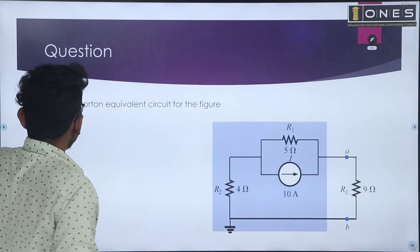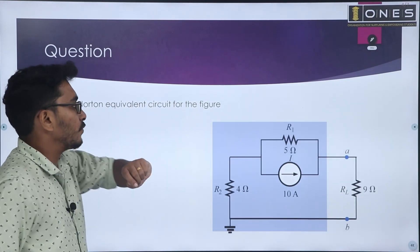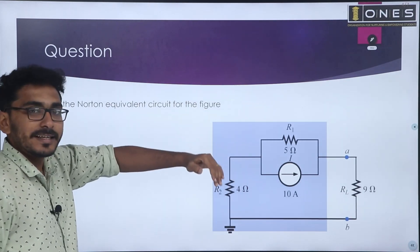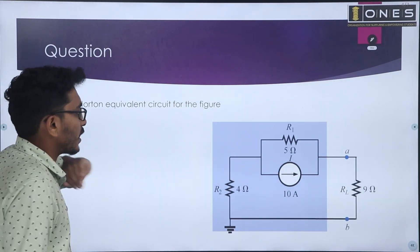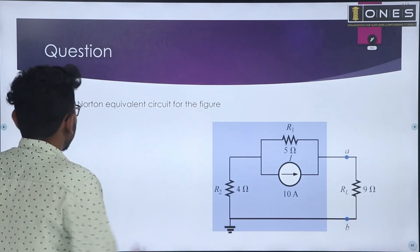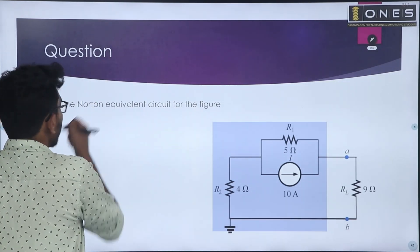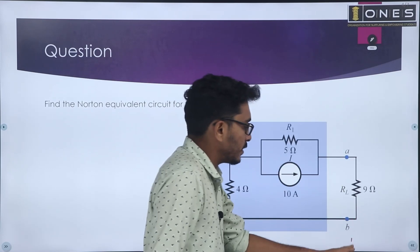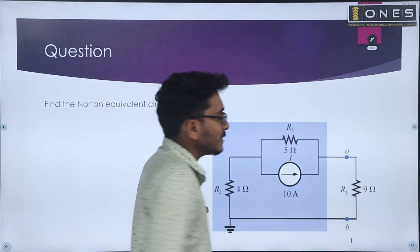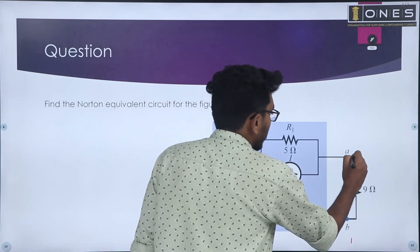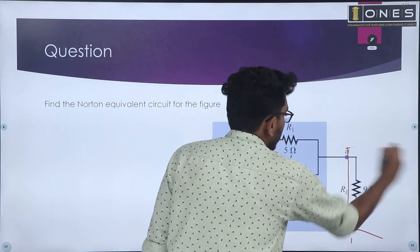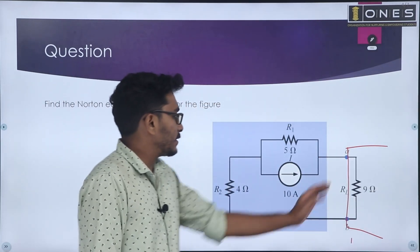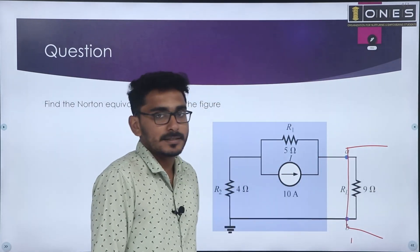One question: find the Norton's equivalent circuit for the given figure. As per the steps, first step: the load resistance which is concerned is replaced. That is, the 9 ohm resistance is replaced.